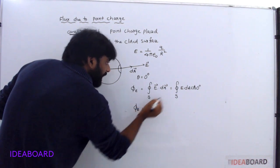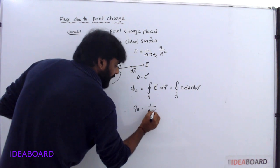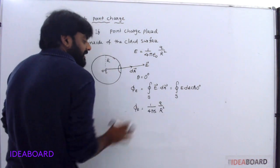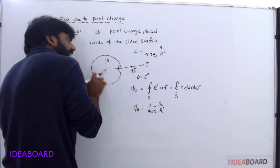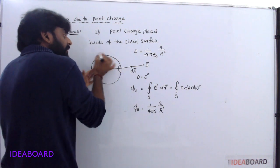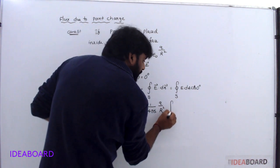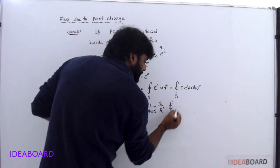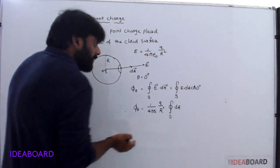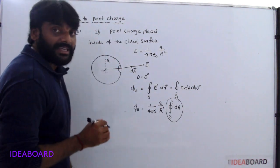Flux is equal to: the electric field intensity E is constant on the surface because all points are at the same distance R. So we take 1 by 4 pi epsilon naught, Q by R square, outside the integral. The remaining integral of DA cos 0 gives the total surface area of the sphere.